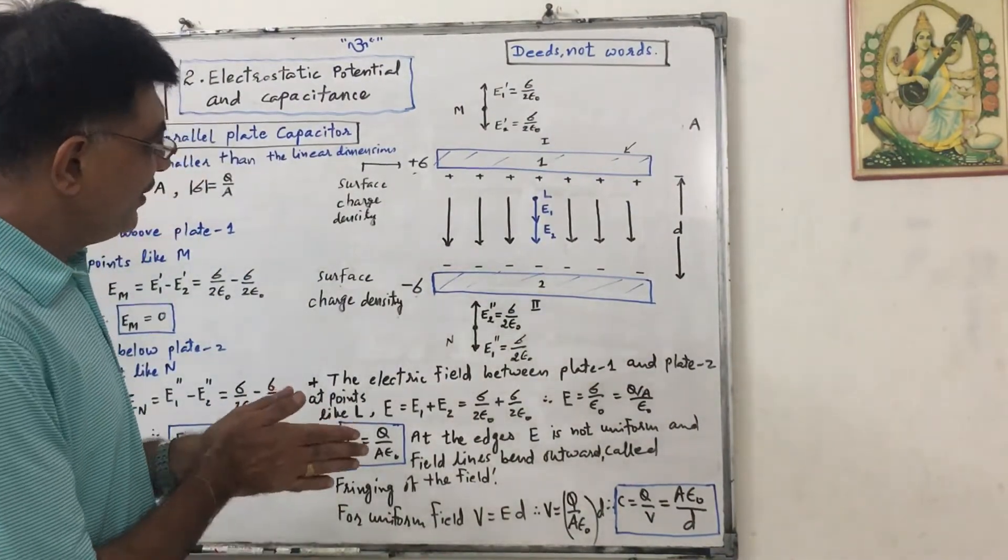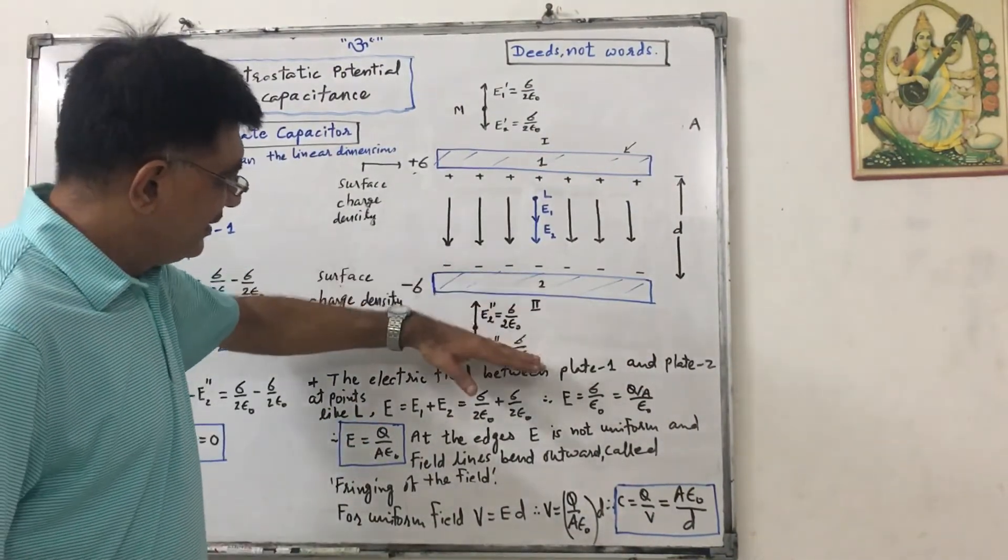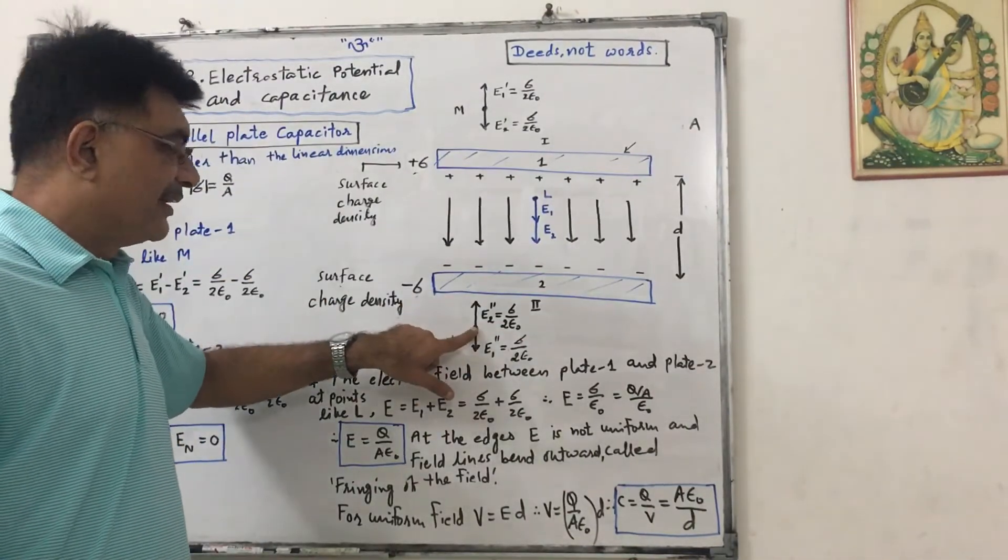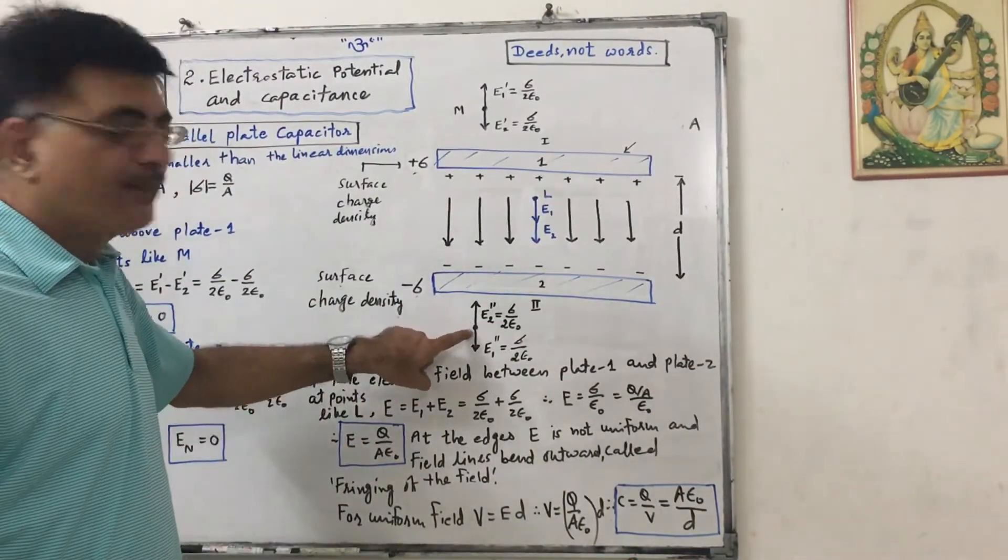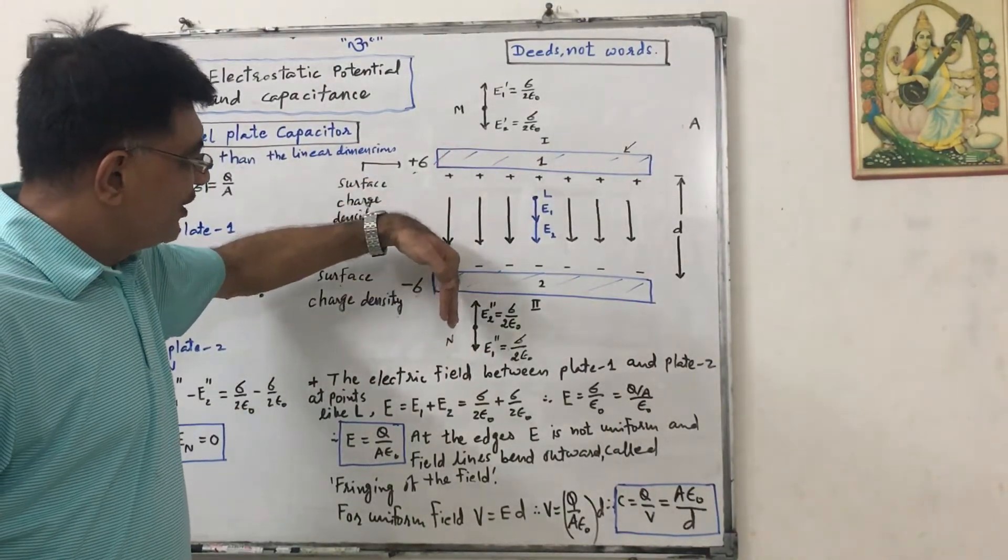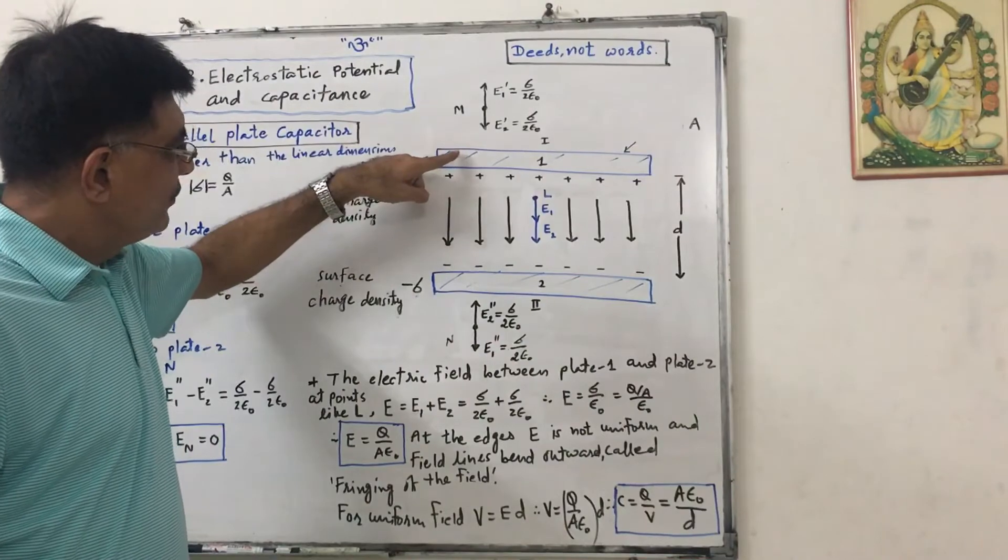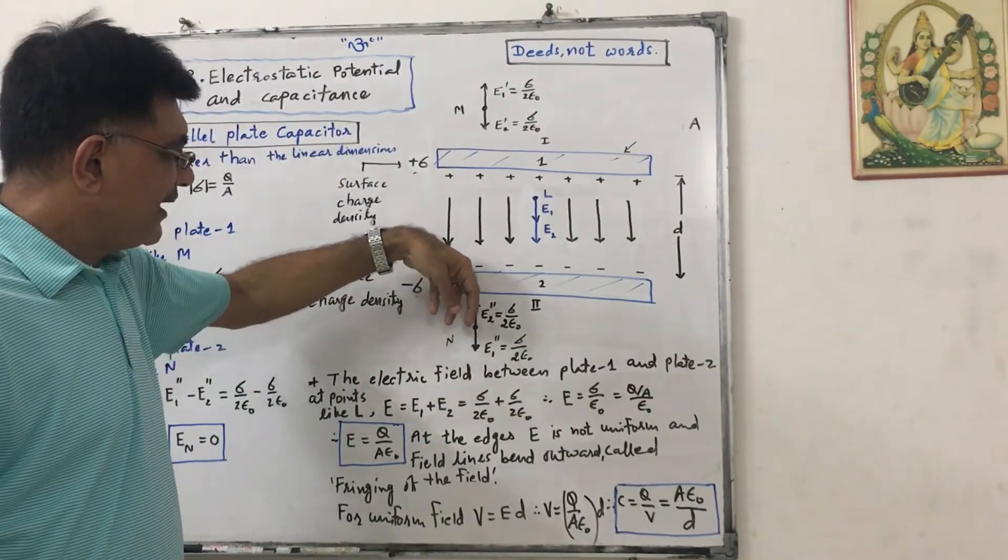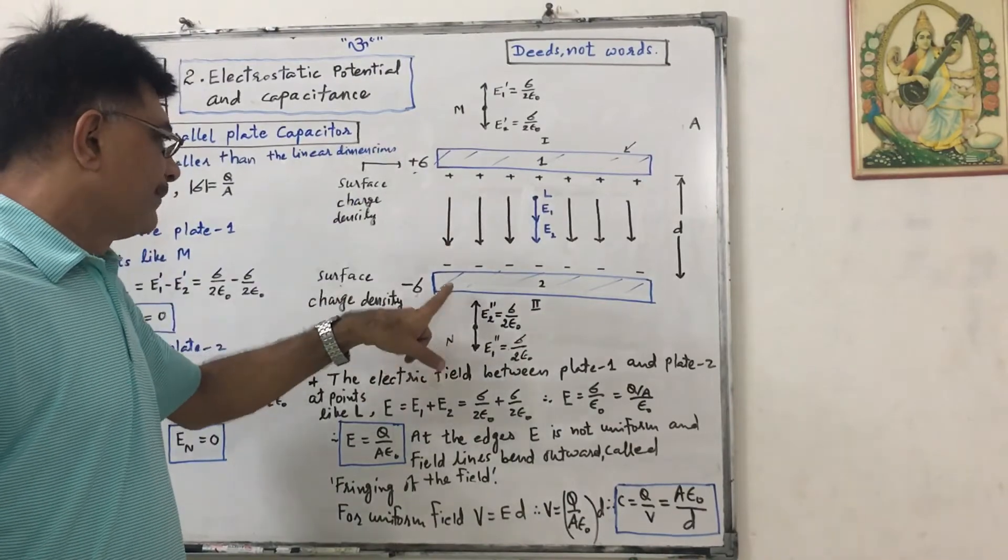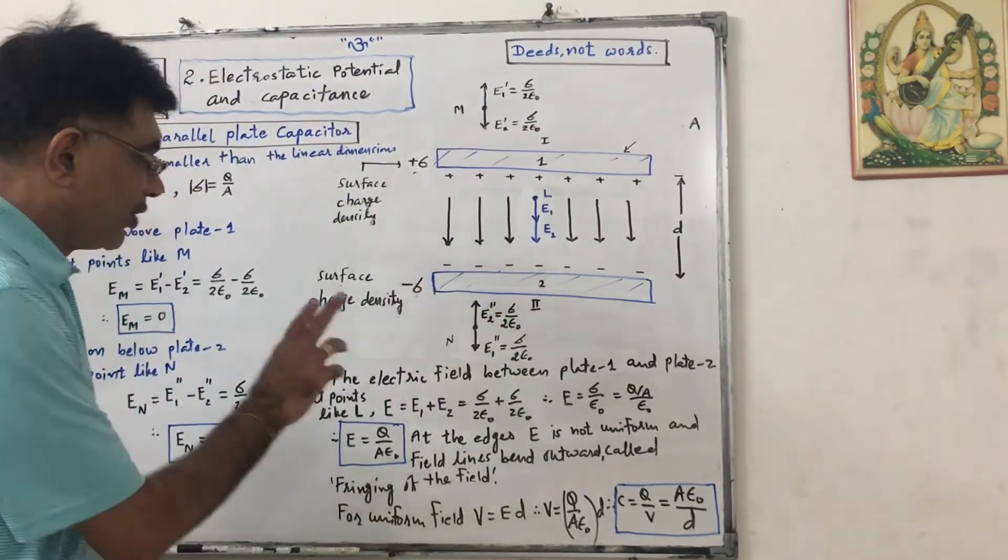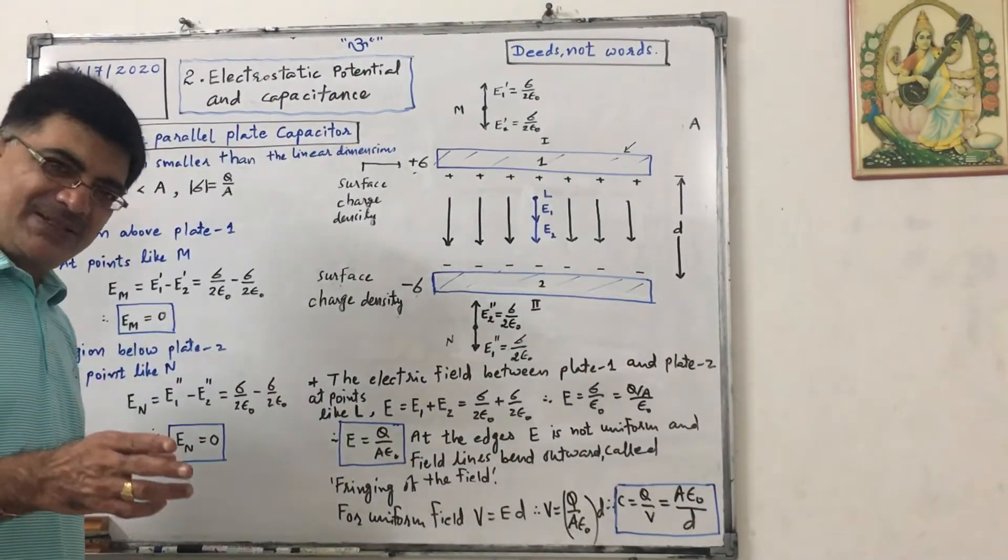Now, if I consider a point here that is below plate 2, like M, if I put here unit positive charge, this plate will offer repulsive force. So electric field due to this plate will be in this direction. And this will offer attractive force. So field due to this minus will be in this direction. But both will have equal magnitudes.